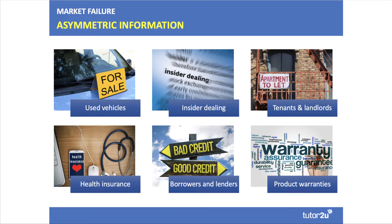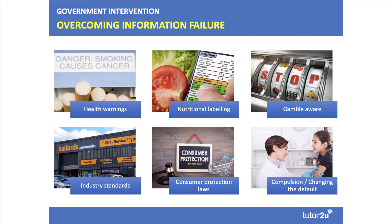In healthcare, doctors in theory have superior knowledge about drugs and treatments, but patients may have more knowledge about pre-existing conditions and lifestyle. There's lots of asymmetric information in healthcare and health insurance markets. You can see there are many examples examiners could focus on, and then you need to think about how to overcome information failure.